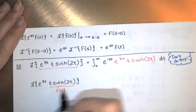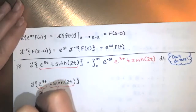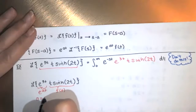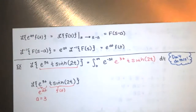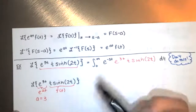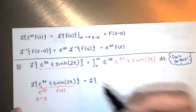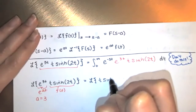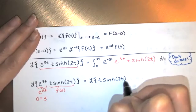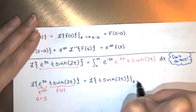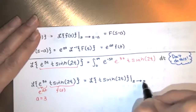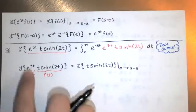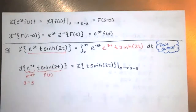We're just pattern matching: f of t is t times hyperbolic sine of 2t, and this is the e to the at part. If that's e to the at, then a is equal to 3. According to the theorem, we're going to take the Laplace transform of f — which in this case is t times hyperbolic sine of 2t — and then replace the s with s minus 3. Let's go to the table of Laplace transforms and look this up.